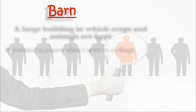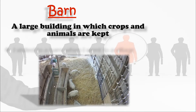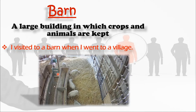The second word is on your screen: barn. It is important for your one word substitution and it means a large building in which crops and animals are kept. You will find this type of barn mostly in rural areas. The sentence you can make: 'I visited a barn when I went to a village.'